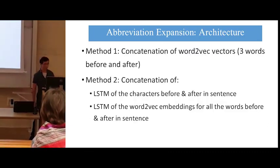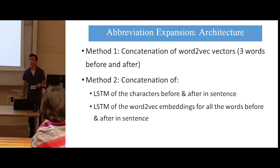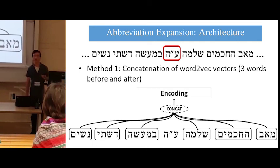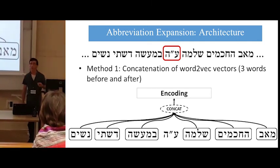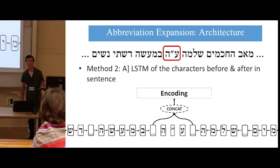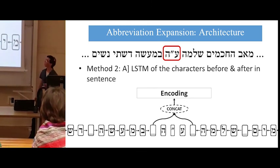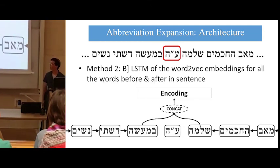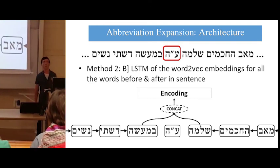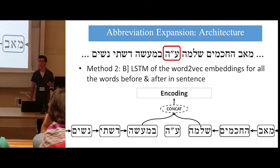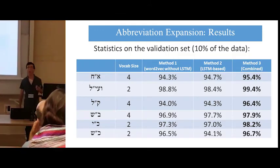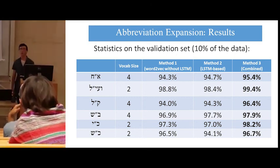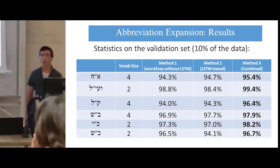We train the neural classifier to determine for each abbreviation what the correct expansion is. We have two methods of input to the MLP. The first method is a concatenation of the word2vec embeddings of the three words before and after the abbreviation. The second method consists of the concatenation of: an LSTM encoding of all the characters in the sentence before and after the abbreviation, and an LSTM encoding of all the words in the sentence before and after the abbreviation. We tested both methods — sometimes method 1 provides better results, sometimes method 2. We concatenated the input from both methods together and performed exceptionally well across the board.